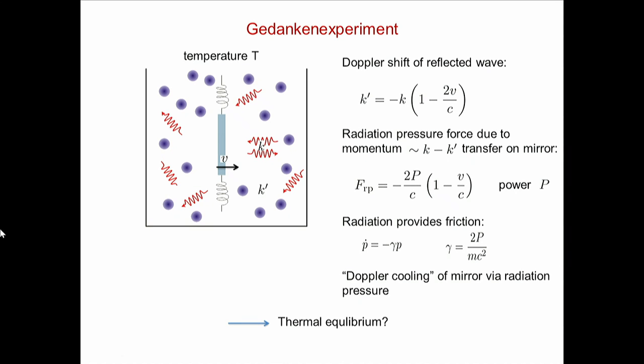He says if this is true - if photons of wave vector k all contribute a radiation pressure force - the mirror will be damped, and then there is no thermal equilibrium. We will just suck out energy from the ideal gas and transfer it to the gas of photons. So how is thermal equilibrium assured in this case? If both gases - the photon gas described by Planck's law, and the ideal gas - are at temperature T, nothing should happen. So what is wrong here?